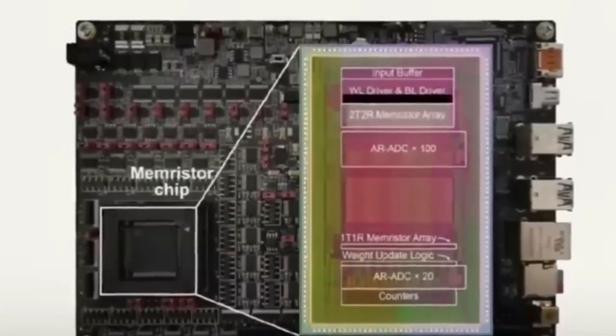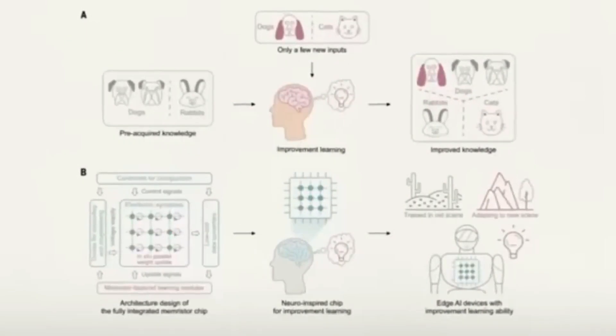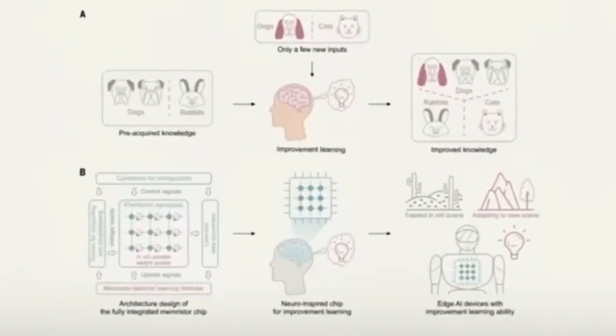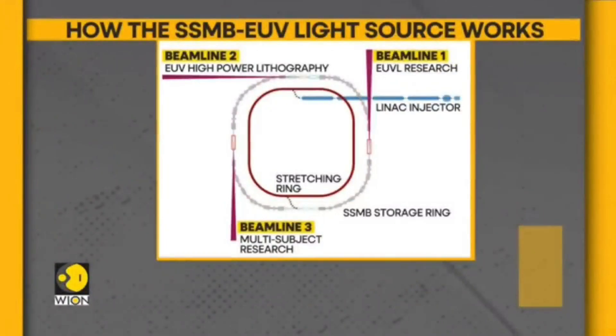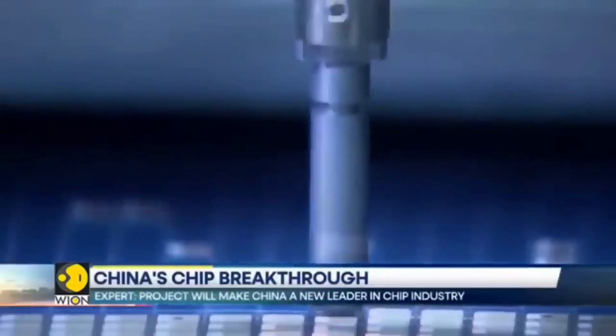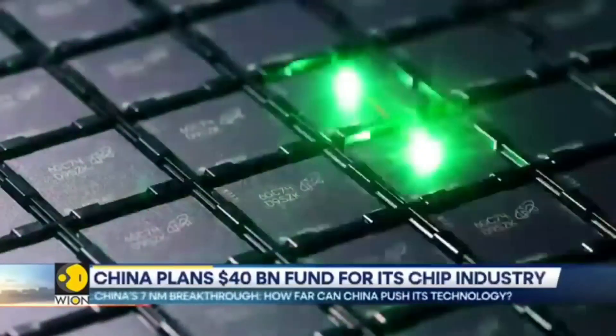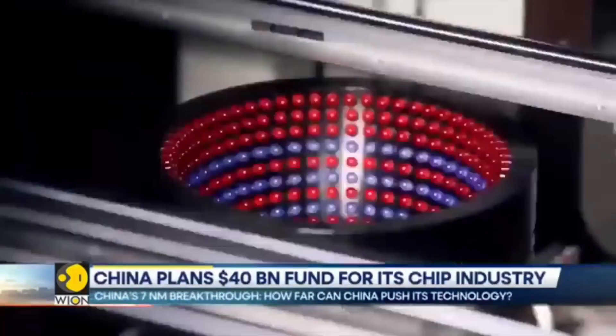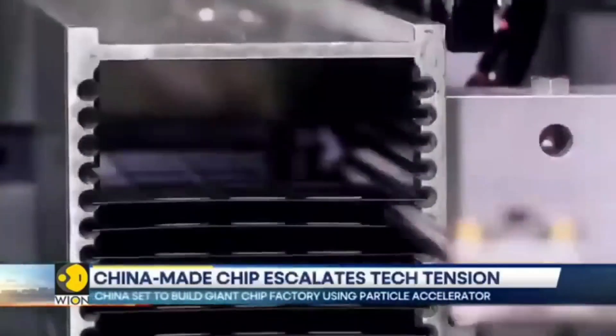As mentioned earlier, memristor technology has the potential to revolutionize the field of artificial intelligence. This means AI systems that are more capable, adaptable, and proficient at handling complex tasks like natural language understanding, image recognition, and autonomous decision-making. With memristors, data storage could become incredibly fast and secure. Imagine never having to wait for your computer to boot up, or your files to load. Data retrieval would be almost instantaneous, and the risk of data loss due to hardware failure could be drastically reduced.